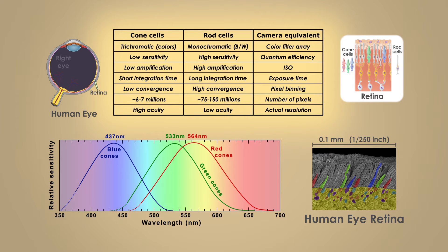Comparing the properties of cone cells and rod cells shows how they are optimized for different tasks. Unlike cone cells, rod cells only come in one variant and therefore cannot identify color. But for every cone cell, there are about 20 rod cells. Each rod cell is more sensitive to light and amplifies the light signal more than cone cells. Rod cells also have longer integration time, meaning they collect light longer before resetting, and the signals from many rod cells are combined, further enhancing their low-light capabilities. Altogether, these properties enable rod cells to remain responsive down to extremely low-light levels, long after cone cells have stopped working.